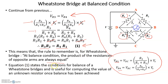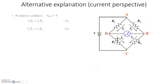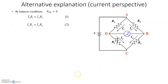This equation states the balance condition for the Wheatstone bridge and is useful for computing the value of an unknown resistor once balance has been achieved. For example, if you want to find R1 and you know R2, R3, and R4, you use this equation. Similarly, you can solve for any of the four resistors provided the other three are known.